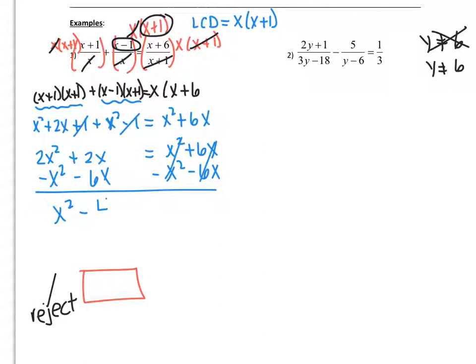Okay, so I'm going to try to find the LCD. Now it looks as though I could factor out a 3 here. So I have a 3 and a y minus 6. This has a y minus 6 and that has a 3. So it looks as though that this is the LCD. So for my LCD, I'm going to write 3y minus 6.